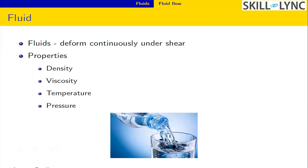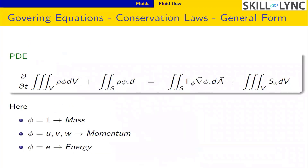What is a fluid? Fluids deform continuously under shear and have properties like density, viscosity, temperature, and pressure. The governing equations of flow are the conservation laws, expressed using volume and surface integral terms. When the variable phi equals 1, it is mass conservation — the continuity equation. With velocity components u, v, w it becomes the momentum equation, and with energy it becomes the energy conservation equation. These three — mass, momentum, and energy conservation — form the general governing equation, which is the basis of CFD.